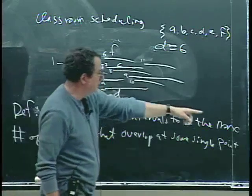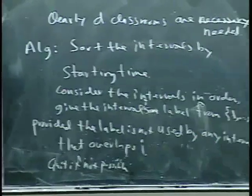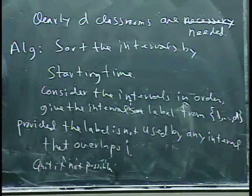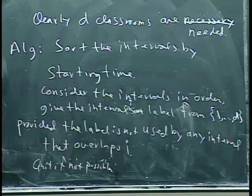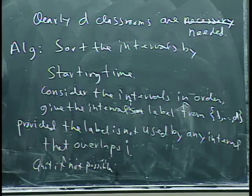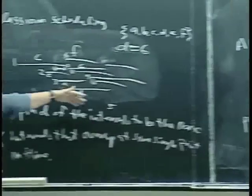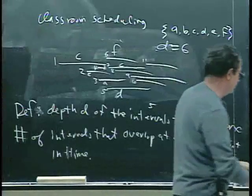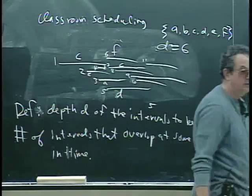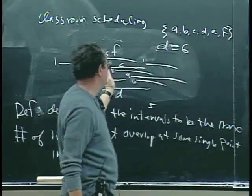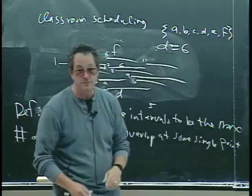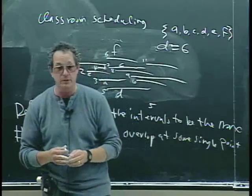Except if you ever get to a place where you don't have enough labels, there isn't one still available, then you have to quit and say, I wasn't able to use just D classrooms. I needed more than D classrooms. So we're going to prove that D is sufficient by proving that this algorithm never fails, that this never happens.